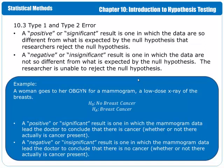So there's a very specific difference in those two types of wording that you have to keep track of. We have guilty versus not guilty in the court of law, and we have reject the null hypothesis or fail to reject the null hypothesis in the hypothesis test setting.